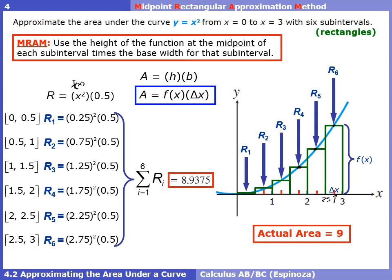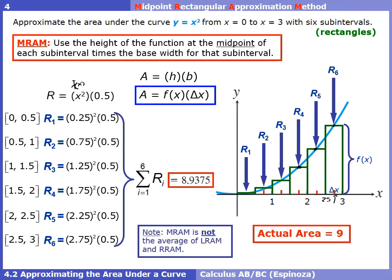One big common misconception to address before we discuss error: MRAM is not the average of LRAM and RRAM. It might seem like it makes sense, but if you check the math you'll see it's actually not. So don't make that mistake of thinking MRAM is just LRAM and RRAM averaged together.